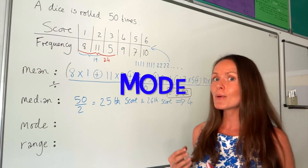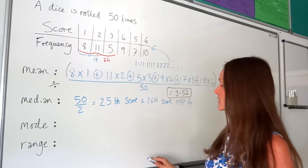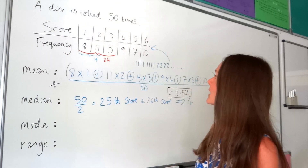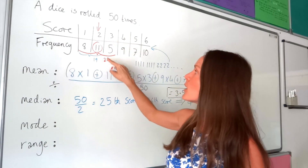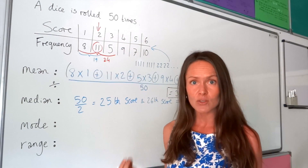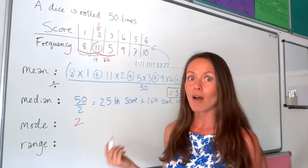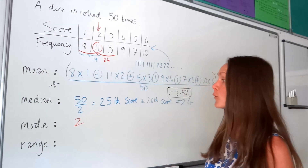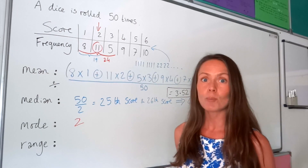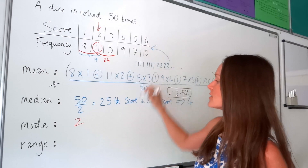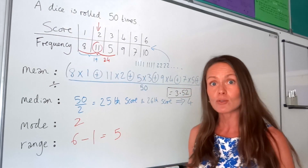The mode is the most frequent value — the one with the highest frequency. Looking at the frequencies, the biggest is 11, which corresponds to the score of two. So the mode is two. For the range, you do the highest score minus the smallest: six minus one equals five. So the range is five.